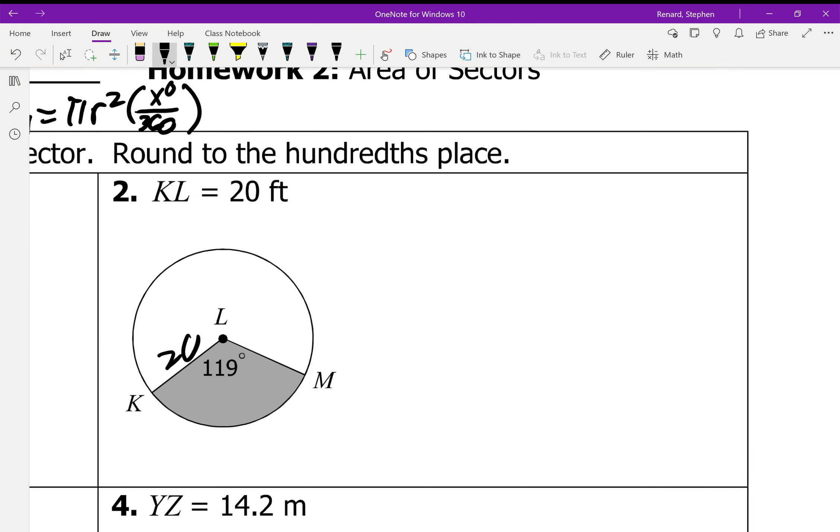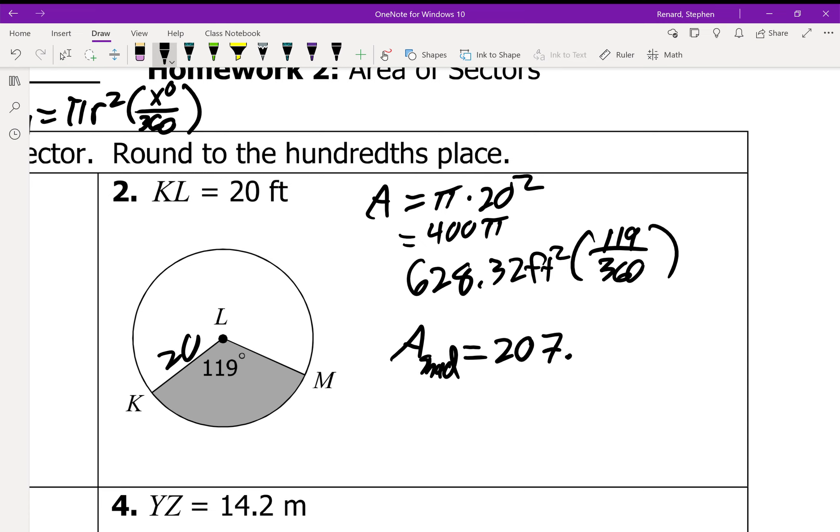KL here is 20. So the area equals pi times 20 squared. That gives me 400 pi. That's 628.32 square feet. But we're not looking for the whole thing. We're only looking for 119 out of 360 of it. So we multiply that number by 119 divided by 360. And we get the area of the shaded is equal to 207.69 square feet. Easy peasy.